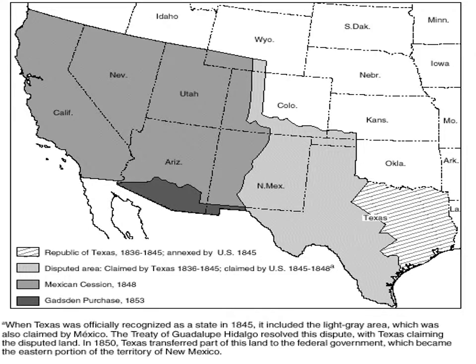The Treaty of Guadalupe Hidalgo ended the Mexican-American War. The United States Army drove the Mexican Army back to Mexico City, and a treaty was signed to end the war. As part of that, the United States annexed California, Nevada, Utah, Arizona, New Mexico, major parts of Colorado, and Texas. If you've been in this area, you know it is a huge land mass.